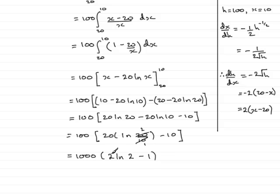You could in fact even use the power rule for logs if you like. You could put this 2 up here as a power. So you'd have the natural log of 2 to the power 2. In other words you could have 1000 multiplied by the natural log of 2 squared. In other words 4 minus 1. Either of these answers are the exact value of the integral.